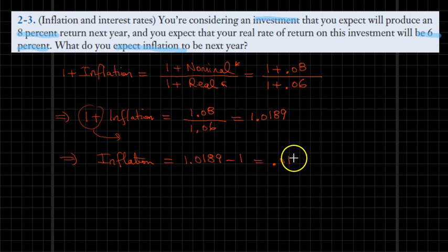Which ultimately gives us 0.0189 or in percentages you can rewrite it as 1.89%. So that would be the answer of our question. The inflation rate, the expected inflation rate over the next year will be 1.89%. That's the end of our solution.